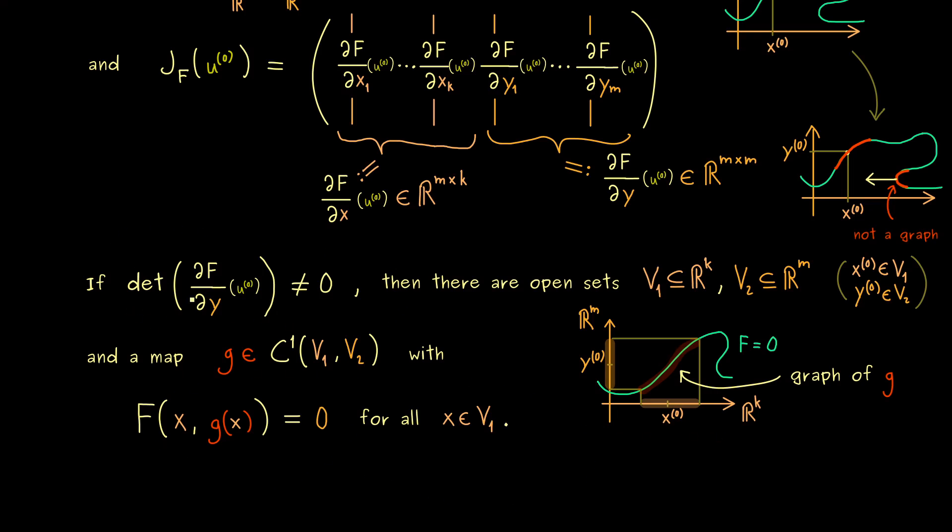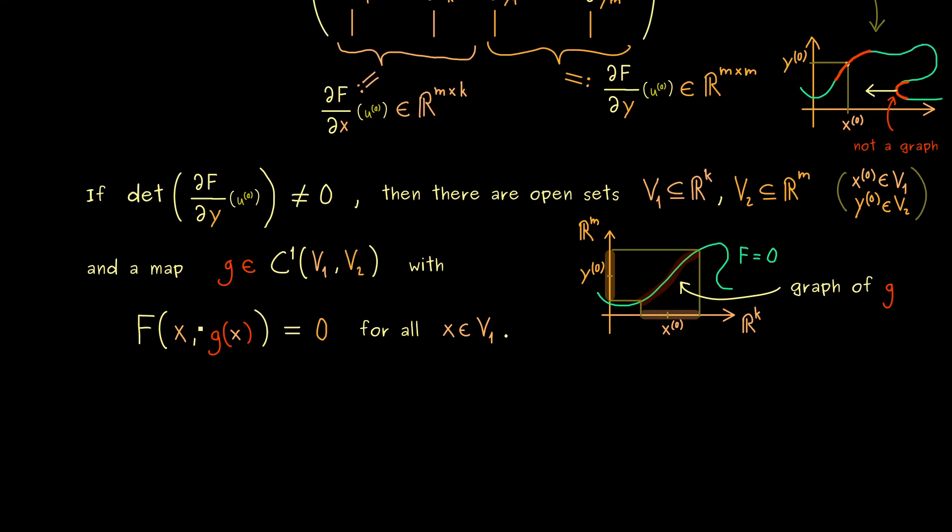Under this assumption, the existence of g is guaranteed. And moreover, we can also say something about the derivative of g. Indeed, it should be the derivative in the general sense, so we talk about the Jacobian. But before we do that, we should clarify again what we have here.